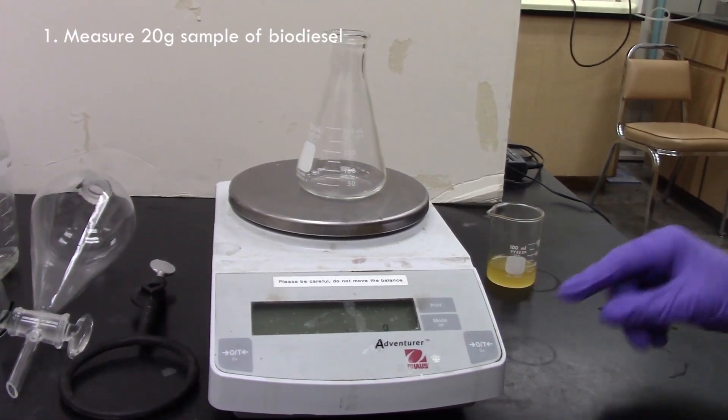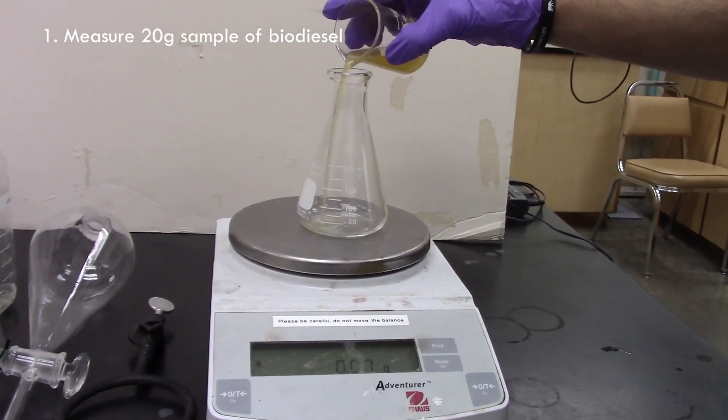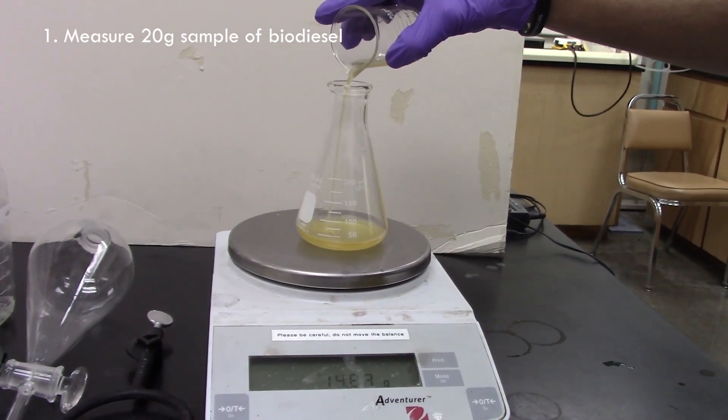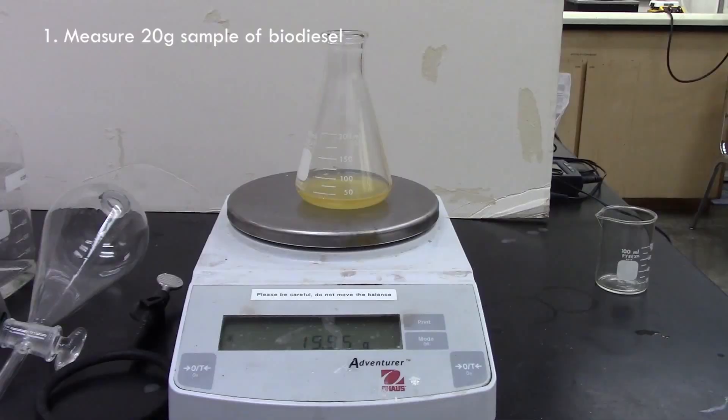The first step is to weigh a 20 g sample of biodiesel to an accuracy of 0.01 g and transfer this biodiesel to the titration flask. Record the sample size before measuring the amount of catalyst present in the biodiesel sample by titrating with 0.1 N hydrochloric acid using the following procedure.